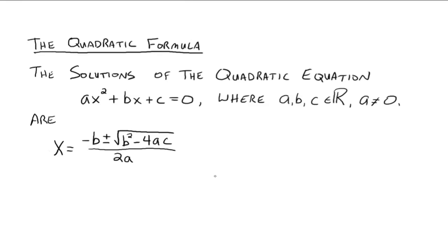We take the coefficients of x squared, x, and the constant term, and we plug them into the formula, and we get our solutions. I'm not doing it in this video, but to show that the solutions of ax squared plus bx plus c equals 0 are indeed this formula, we use completing the square. When we do that with this generic equation, this is the formula that pops out, and it works for every single quadratic equation — you can solve every quadratic equation using the quadratic formula.